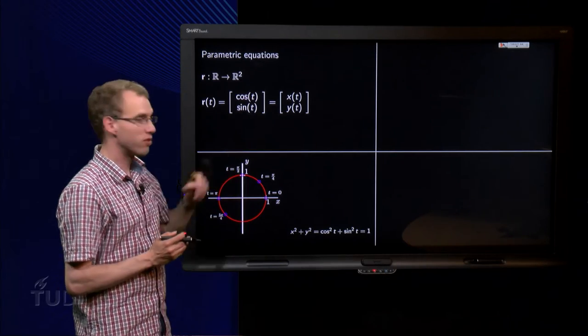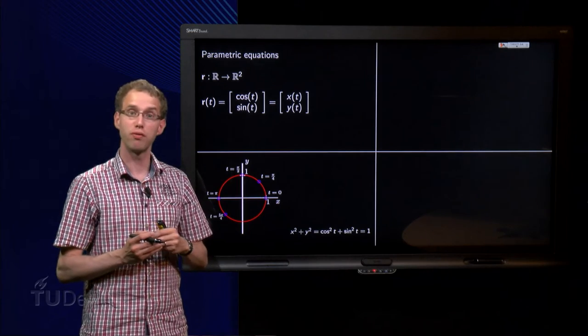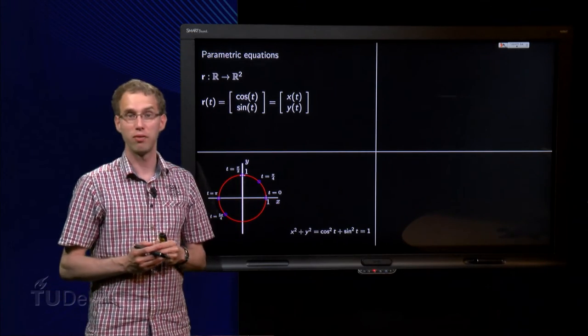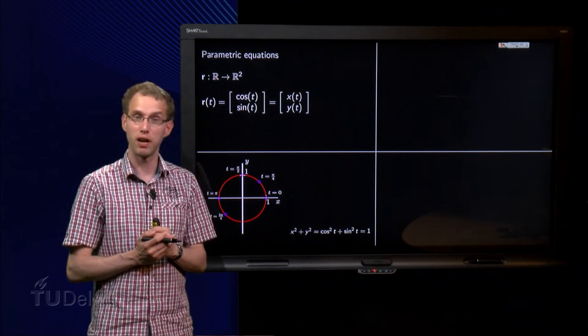If we continue and take t equals π/4, we get x equals cos(π/4) equals ½√2, y equals sin(π/4) equals ½√2. So we get the point over here for t equals π/4.